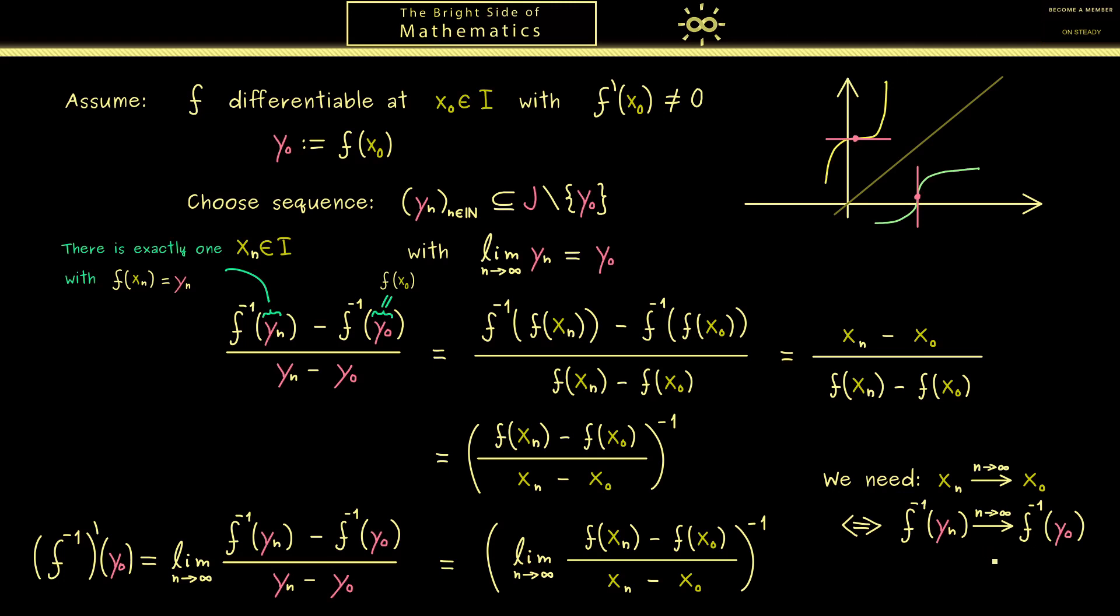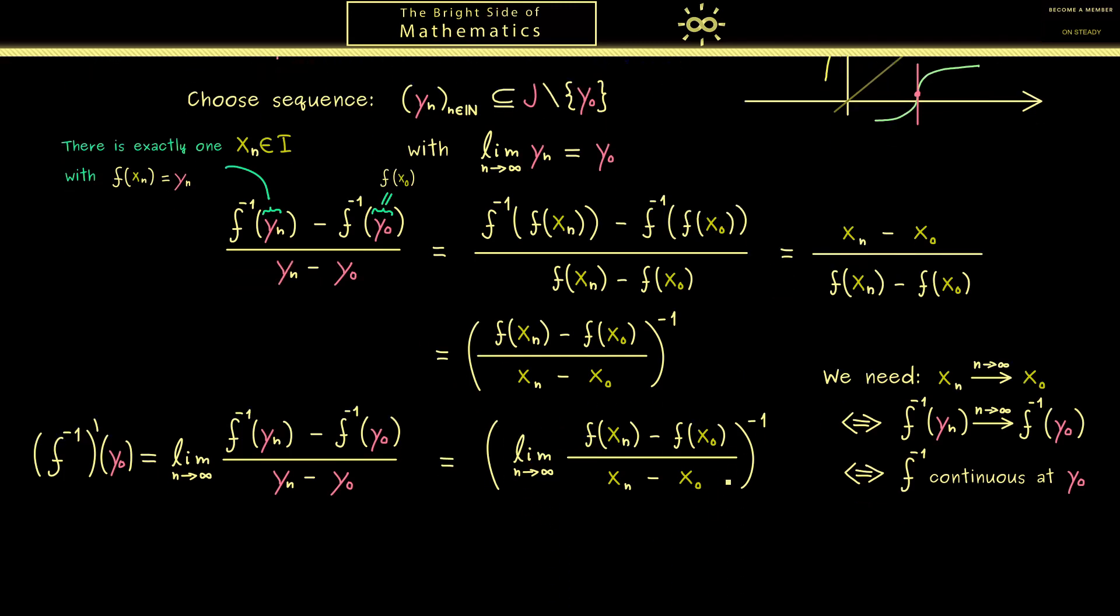I think at this point you are very well trained at real analysis and recognize this property. Namely it's by definition the continuity of f inverse at the point y0. Hence this is a thing we have to assume at the beginning such that this calculation works. But in the case we have it, this is indeed the derivative of f at the point x0. So in short f prime x0. And there we have it. This is the connection between the derivative of f and the derivative of the inverse function of f.